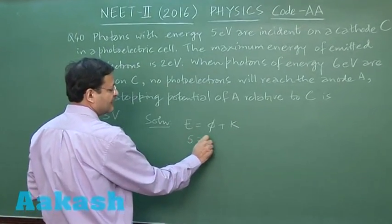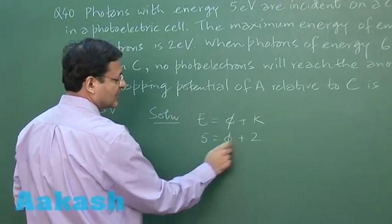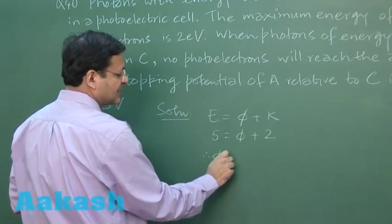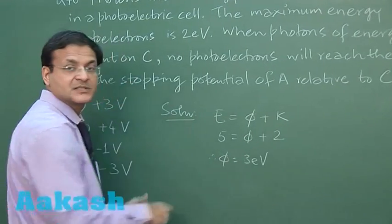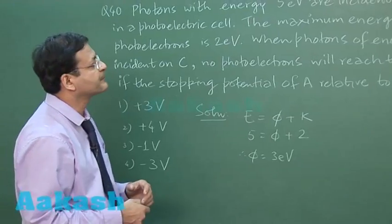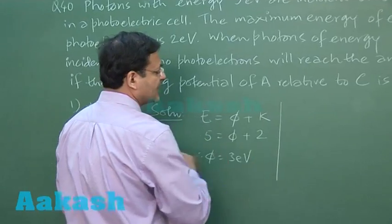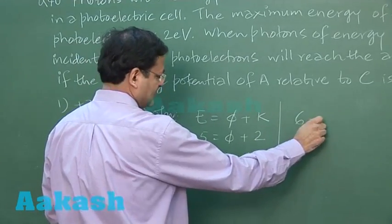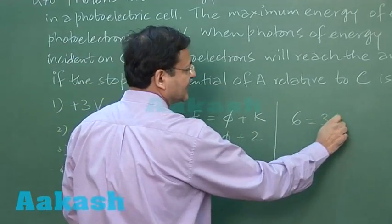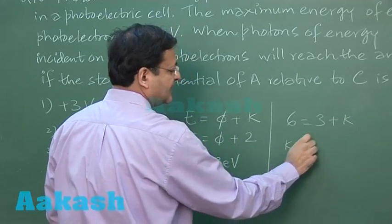So here it is 5, 5 minus 2, so you can see the work function is 3 electron volt and it will remain constant. Now when photons of energy 6 electron volt are incident, now this time 6 is incident, 3 will be gone and kinetic energy is 3 electron volt.